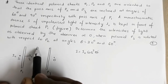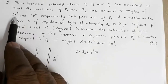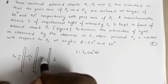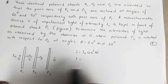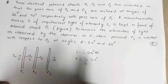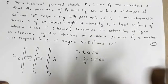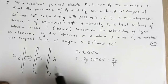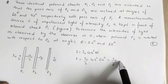Light of intensity i0/2 is now incident on P2. The angle between P1 and P2 is 60°. Applying Malus's law, the intensity emerging from P2 is i = (i0/2)·cos²60°. Since cos 60° = 1/2, cos²60° = 1/4, so the intensity is i0/8. The intensity of light emerging from P2 is i0/8.